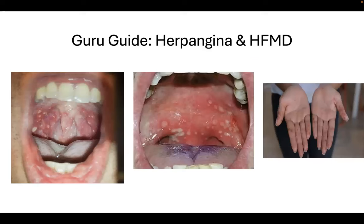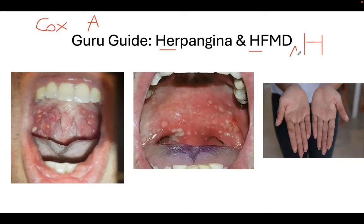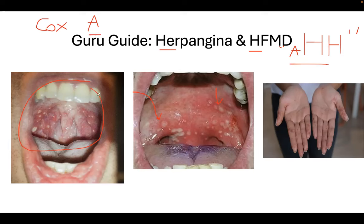Hand-foot-mouth disease. Here is your memory guide: two conditions caused by Coxsackievirus A are herpangina and hand-foot-mouth disease. They both start with the letter H, and when you say 'ah,' you open your mouth — those are the lesions of herpangina and the ulcerations of hand-foot-mouth disease. For you to say 'ah,' that's Coxsackievirus A, not Coxsackievirus B — that is herpangina and hand-foot-mouth disease.